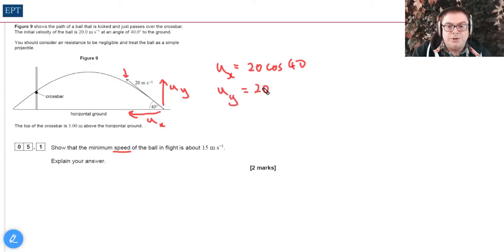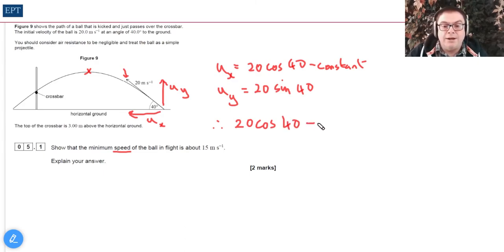The thing is, we know that ux is constant—it's not going to change. However, uy is going to rise and fall depending where it is in its path. When it's at the top here, we know that uy is going to be zero, and so therefore we can say that its minimum speed is going to be at that top point when the y component is zero. Therefore minimum speed is simply 20 cos 40°, and when you work that out you get around about 15.3 m/s.